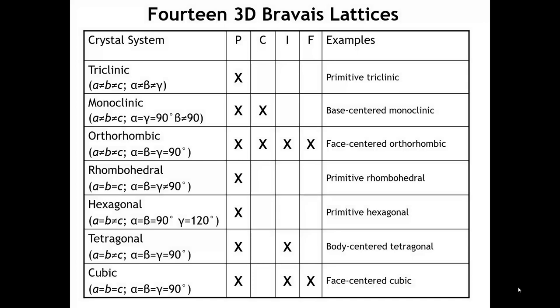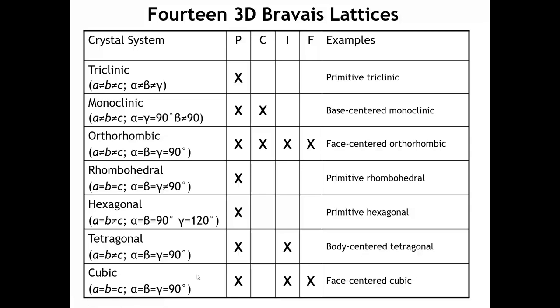Just a reminder of the Bravais lattices that we encounter in three dimensions. There are seven different shapes and various kinds of lattice centering. For some lattices, like the orthorhombic lattice, we could have a primitive orthorhombic lattice, a base-centered orthorhombic lattice represented by C, a body-centered orthorhombic lattice represented by I, or a face-centered orthorhombic lattice represented by F. For all other types of lattices, we have fewer choices of centering, as explained back in Lecture 2. These describe the translational symmetry of our three-dimensional space groups.